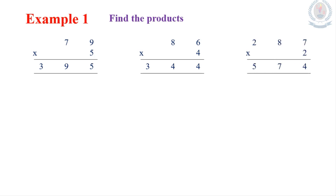Next example: 287 multiplied by 2. Multiply the 1's place: 2 times 7 is 14. Write 4 in the 1's place, carry 1 to the 10's place. Tens place: 2 times 8 is 16, plus 1 carried gives 17 tens; write 7, carry 1 to the 100's place. Hundreds place: 2 times 2 is 4, plus 1 carried gives 5. Final answer: 574.